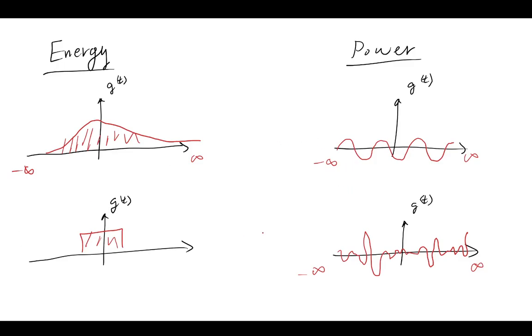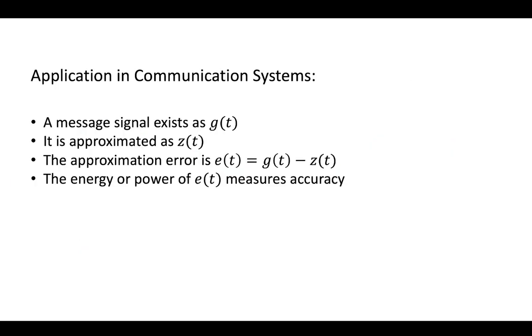So what is the application of this in communication systems? Why do you care about energy and power signals? One simple example is that if you have a message signal and you approximate it, then you can take the error as the difference of the signal, and the energy or power of the error would measure the accuracy of your approximation.